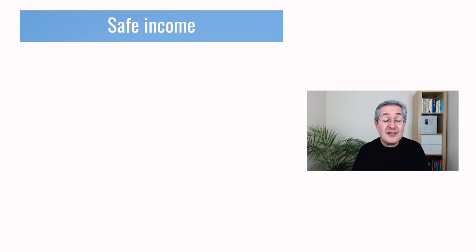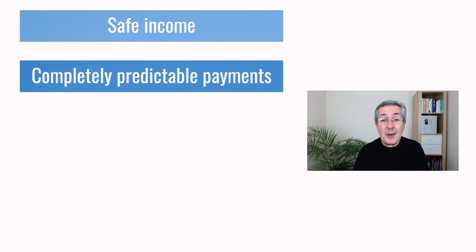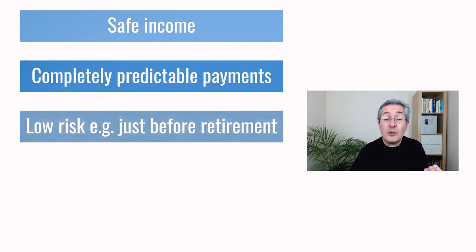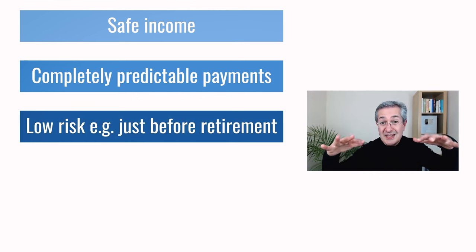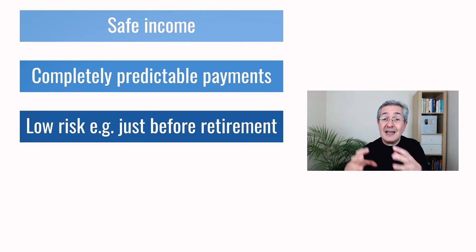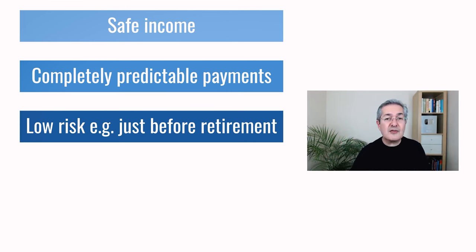So why build a bond ladder in the first place? Well, one reason is to generate a very safe income. Another thing that people like about bond ladders is that they tell you exactly when you're going to receive money and exactly how much you'll receive. They are very predictable, and that can help a lot with things like planning your retirement. One typical use case might be just before retirement when you want to reduce the risk of your portfolio to avoid something called sequencing risk, because you're very sensitive to a drawdown early on in retirement.